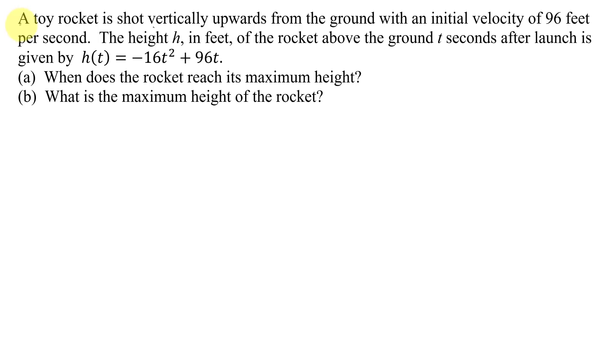This problem states a toy rocket is shot vertically upwards from the ground with an initial velocity of 96 feet per second. The height h in feet of the rocket above the ground t seconds after launch is given by h(t) equals negative 16t squared plus 96t. In part A, I need to find when does the rocket reach its maximum height, and in part B, what is the maximum height of the rocket.